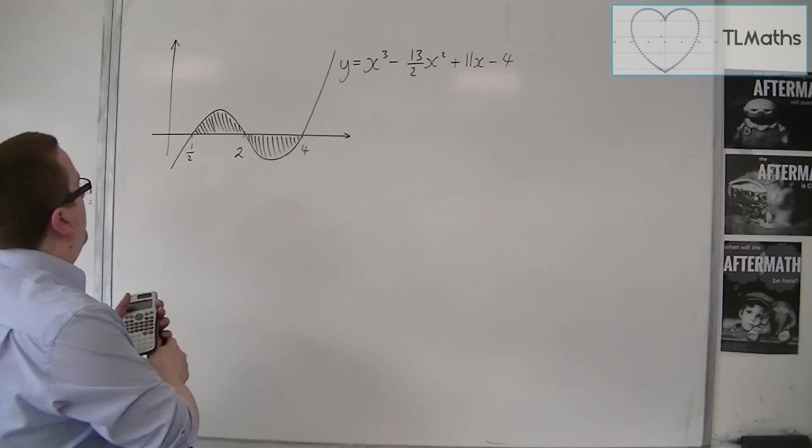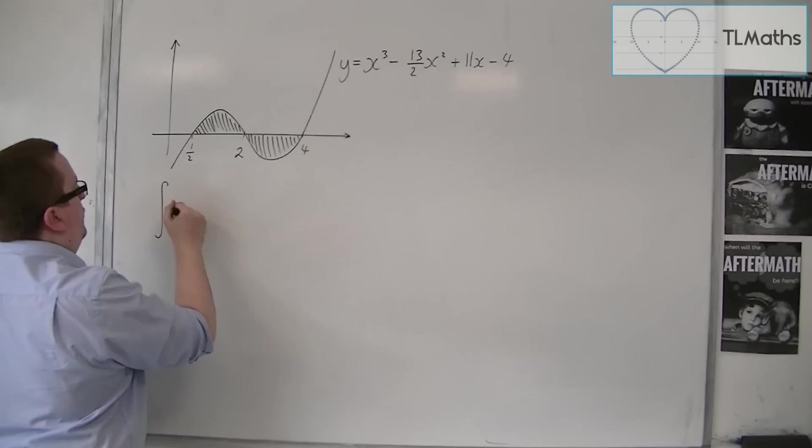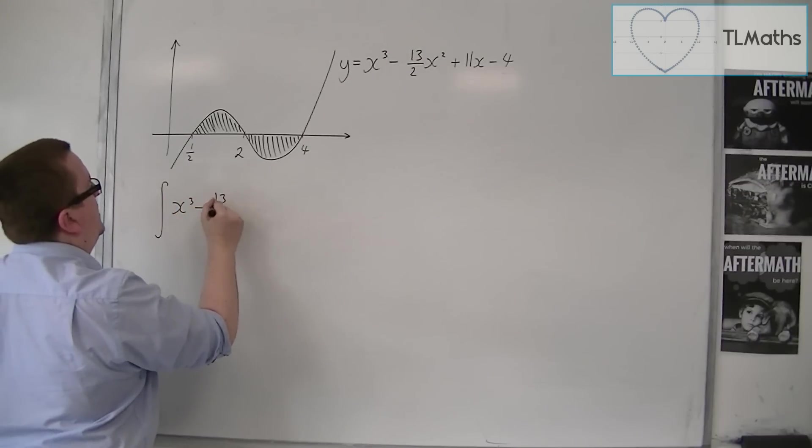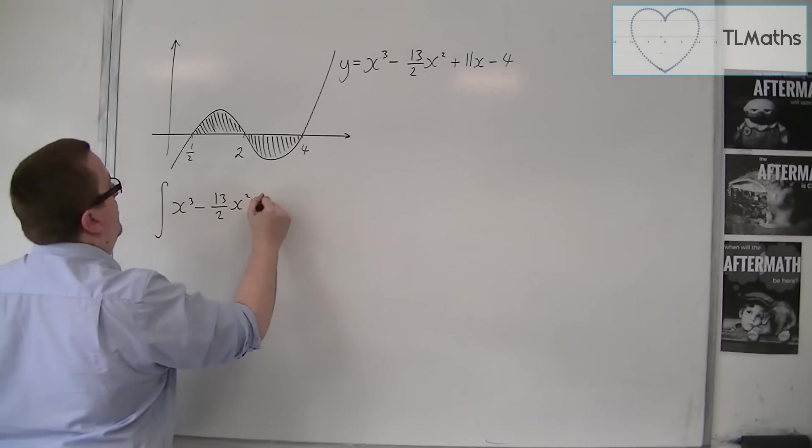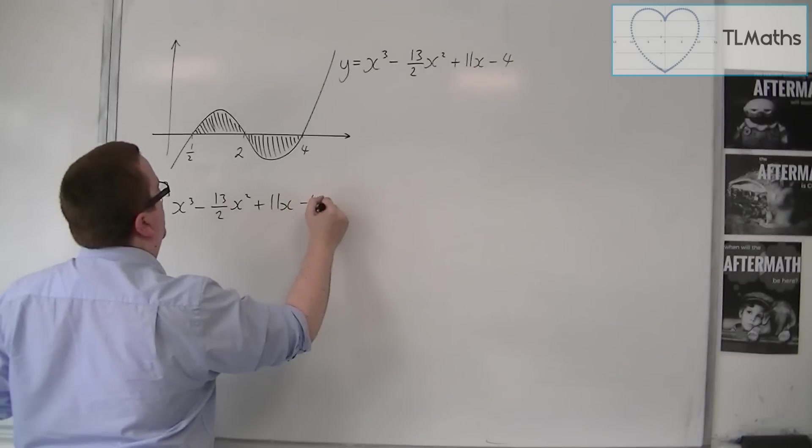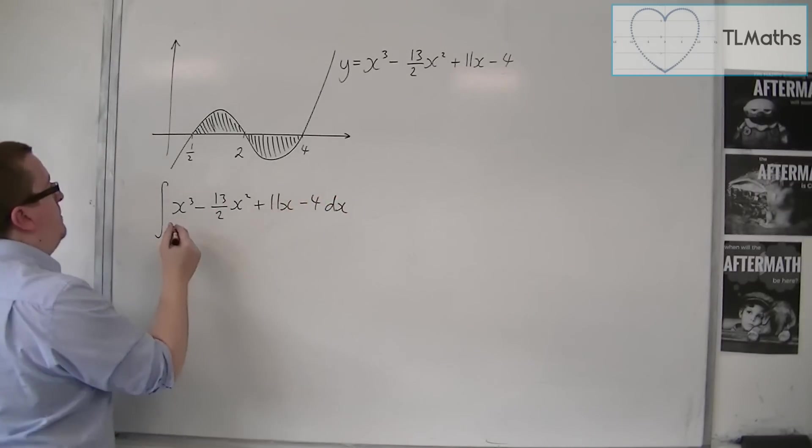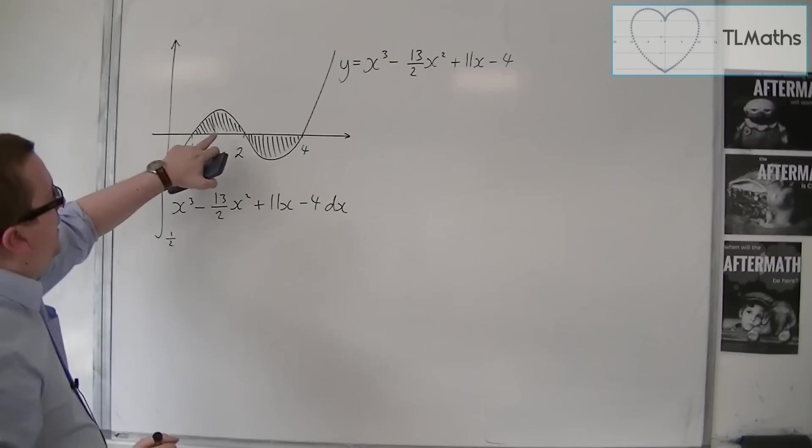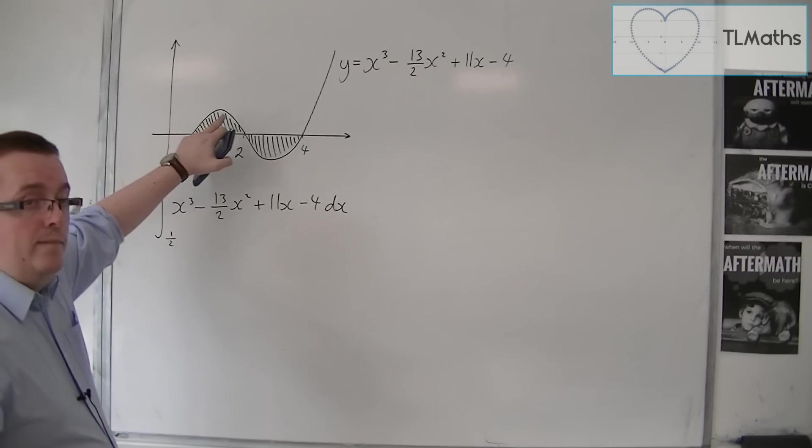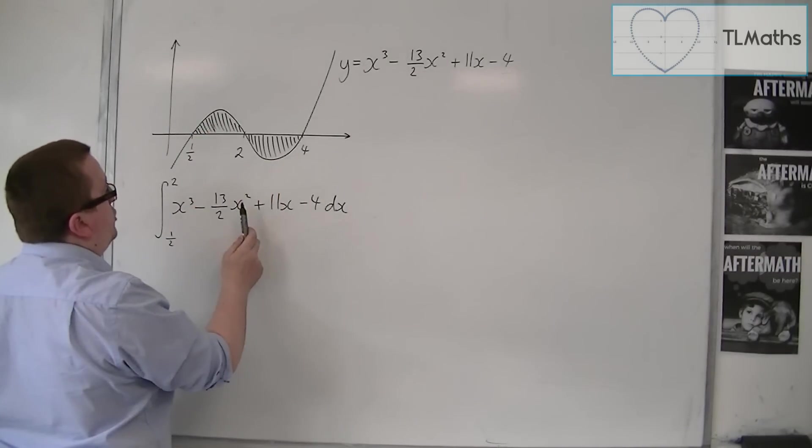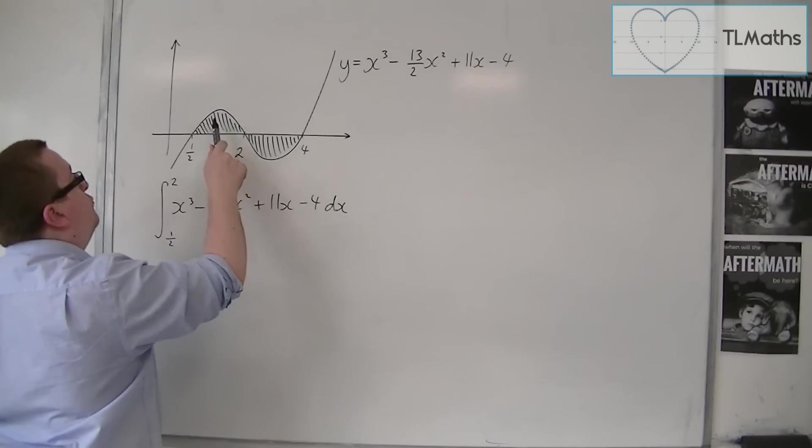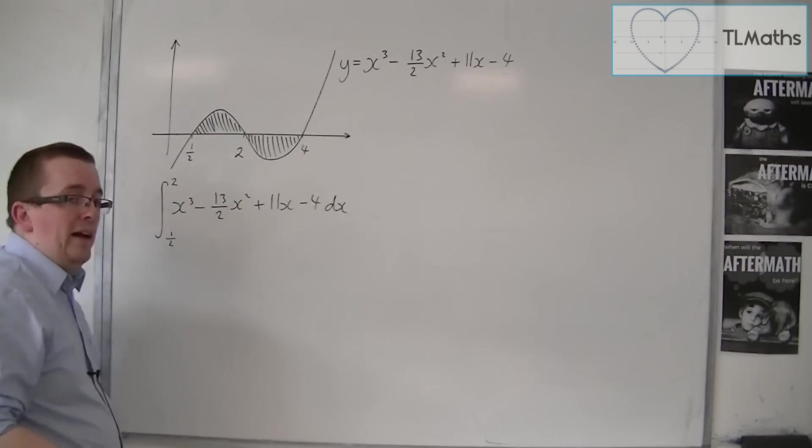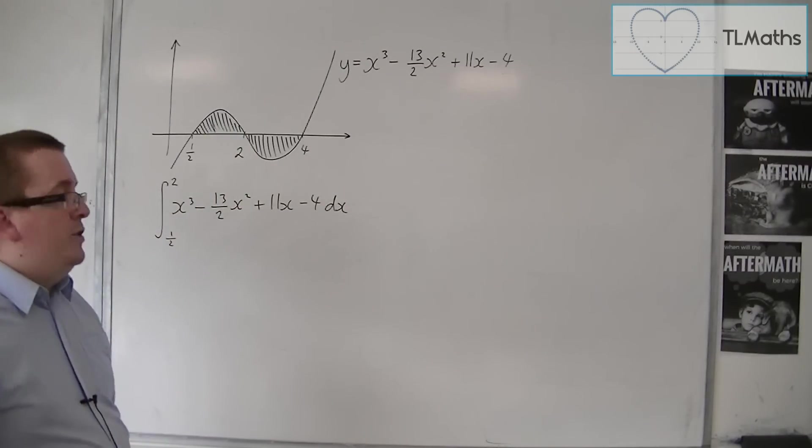So what I want to do is integrate x³ - 13/2 x² + 11x - 4, and I first want to integrate it between 1/2 and 2. And that's going to give me this region here. Now because of a lack of symmetry here this region will not be the same size as that one, so I do need to do two integrals.